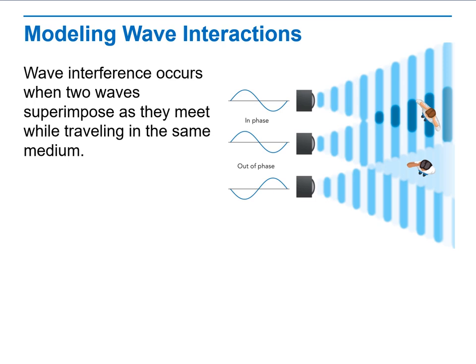Now, when I talk about modeling wave interaction, we have in phase, we have out of phase. Wave interference occurs when two waves superimpose as they meet while traveling in the same medium.